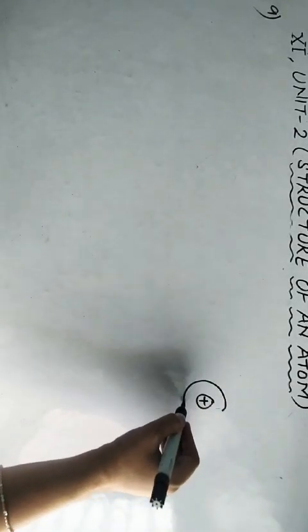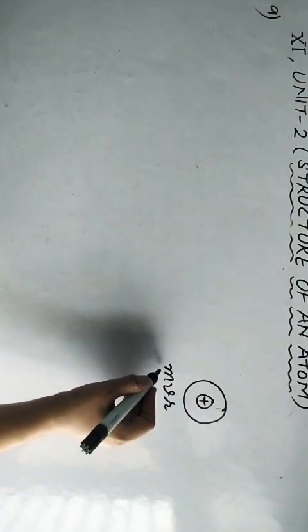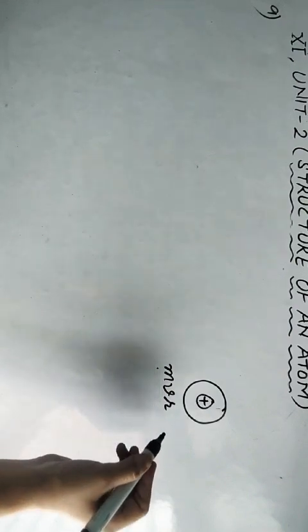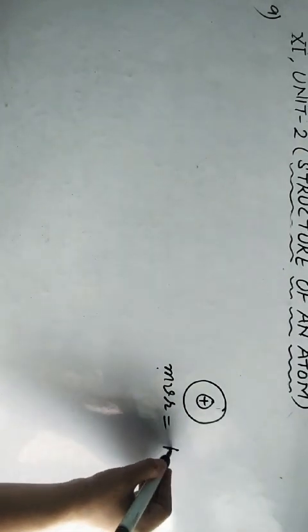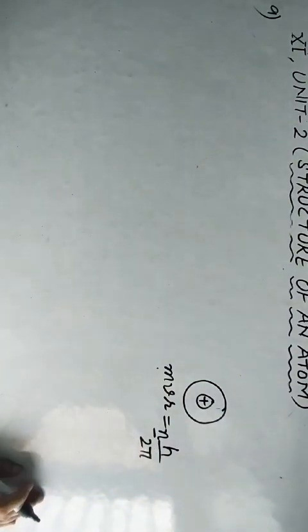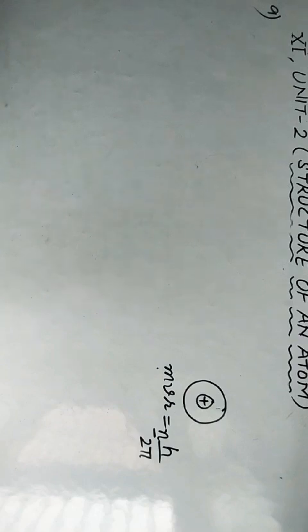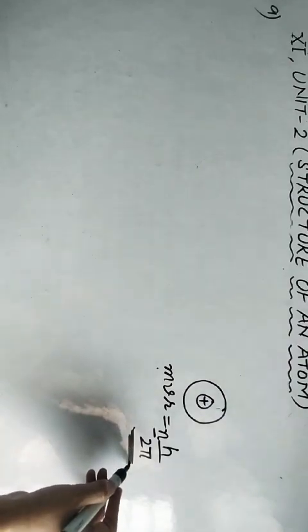Now, we said that electrons revolve around the nucleus in circular orbits. Whenever any body moves in a circular orbit, it has angular momentum, denoted by mvr. This angular momentum is a whole number multiple of h/2π. So only those orbits are permitted in Bohr's model in which the angular momentum of the electron is a whole number multiple of h/2π, where h is Planck's constant.